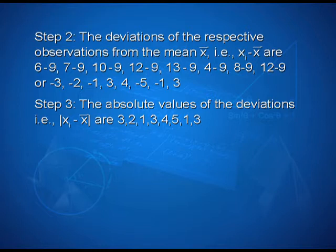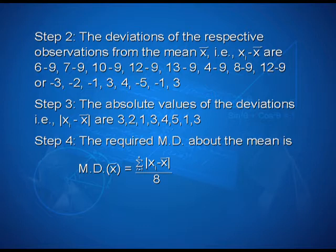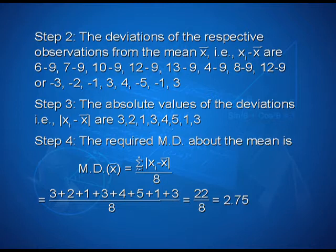In step 3, the absolute values of the deviations |xi − x̄| are 3, 2, 1, 3, 4, 5, 1, 3. In step 4, the required mean deviation about the mean is: MD(x̄) = (3+2+1+3+4+5+1+3) / 8 = 22 / 8 = 2.75. Instead of carrying out labeled steps every time, we can carry on the calculation directly.